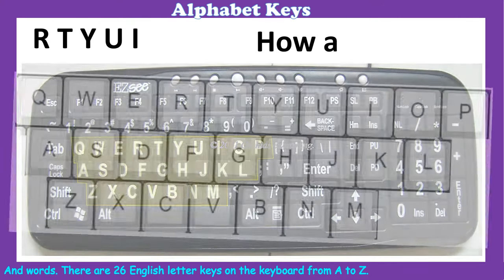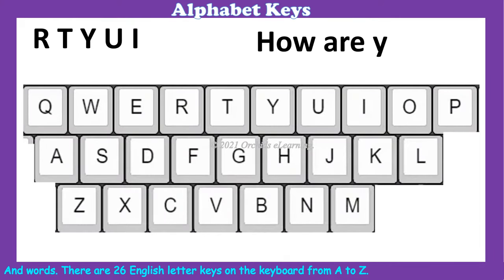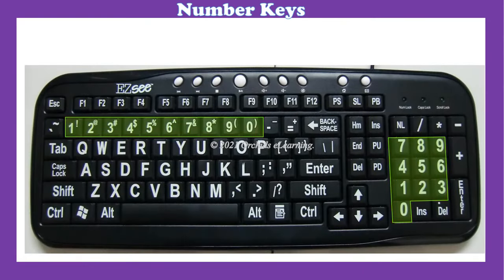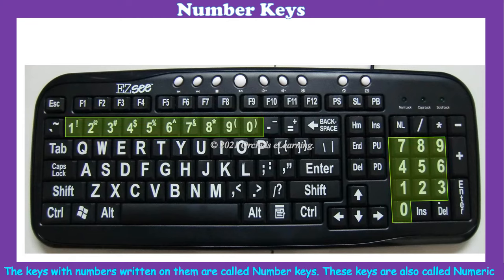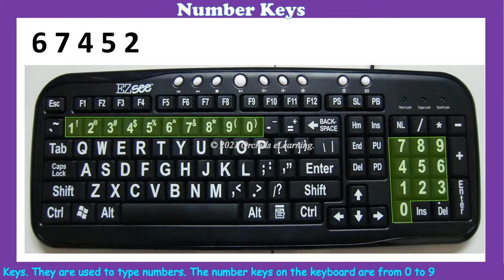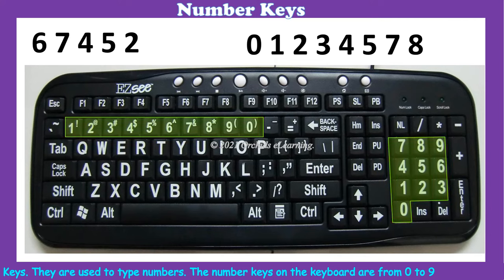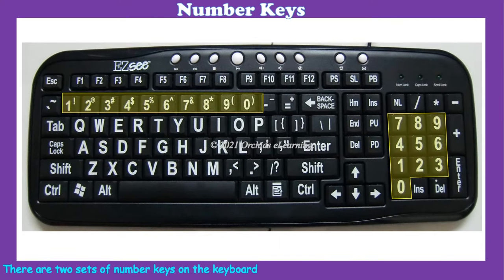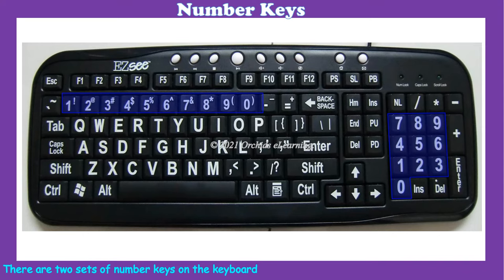There are 26 English letter keys on the keyboard, from A to Z. Number keys: the keys with numbers written on them are called number keys. These keys are also called numeric keys, and they are used to type numbers. The number keys on the keyboard are from 0 to 9. There are two sets of number keys — one set is at the top of the alphabet keys, and the other set is at the right side of the keyboard.